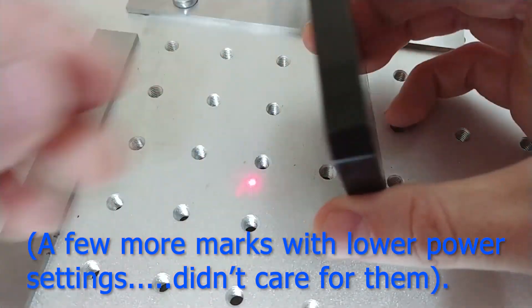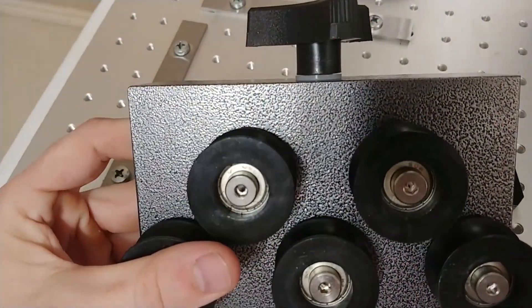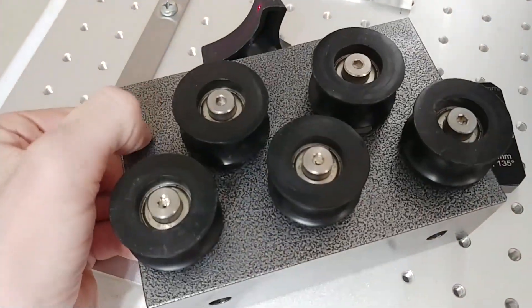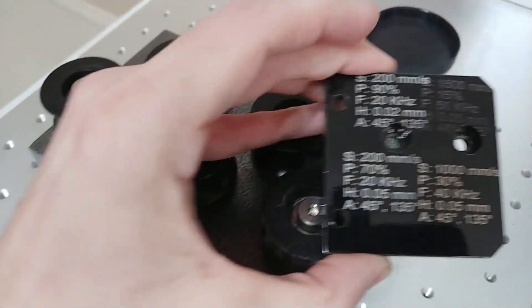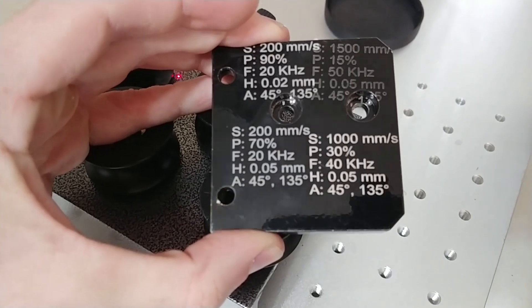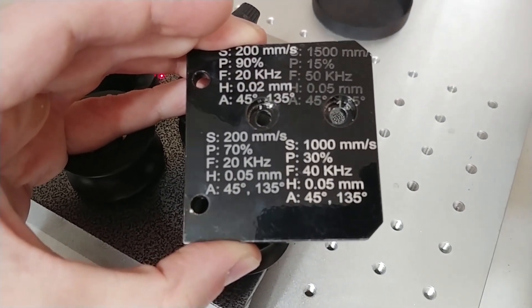I guess it's a matter of personal preference but what I'm going to do now is mark this tooth straightener that I made quite a while ago and it's got a silver vein powder coat finish. I don't know if it's going to be different because this definitely has more texture to it than the gloss black powder coat did. So the settings I'm going to use are these on the bottom right: 1000, 30 percent, 40 kilohertz, and 0.05 hatch spacing with those two angles.